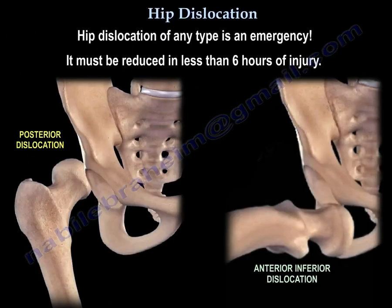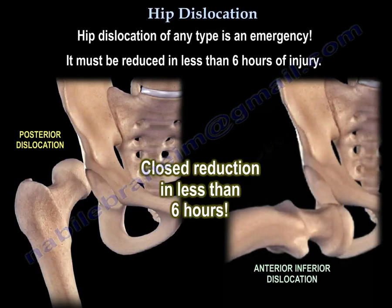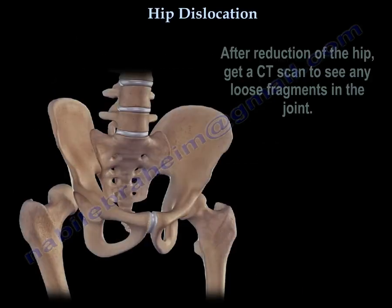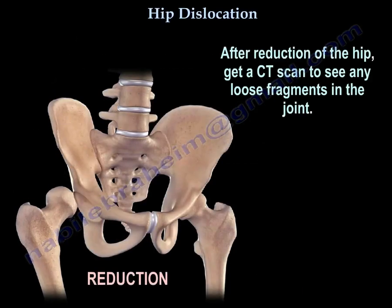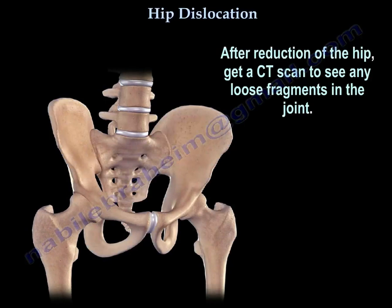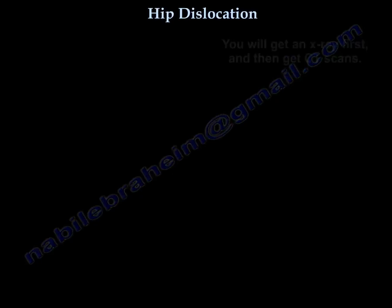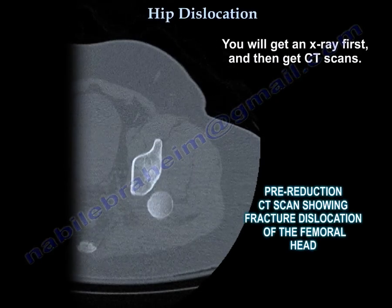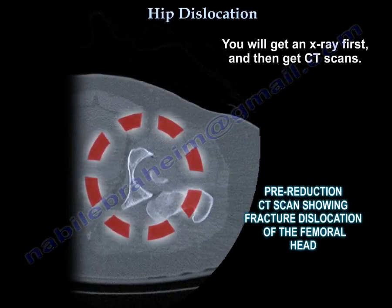Hip dislocation of any type is an emergency. It must be reduced in less than six hours of injury. After reduction of the hip, obtain an x-ray first, and then a CT scan to check for any loose fragments in the joint.